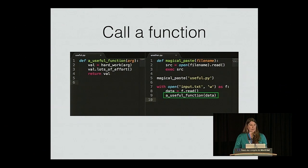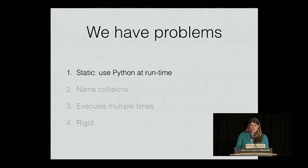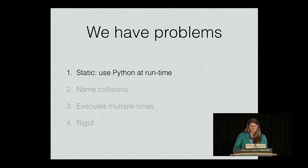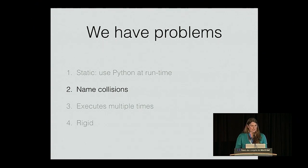Now we have a way to dynamically run Python code. This code, as currently written, will work — we will have a useful function available to us by invoking our magical paste function. We can solve this problem of doing a static analysis of a dynamic language, which was not a great idea, by using a Python native function. Let's look at the second problem of name collisions. Suppose we had another file that defined another function named a useful function — one of those would supersede the other, and we couldn't tell that it would happen without reading all of the relevant source code.